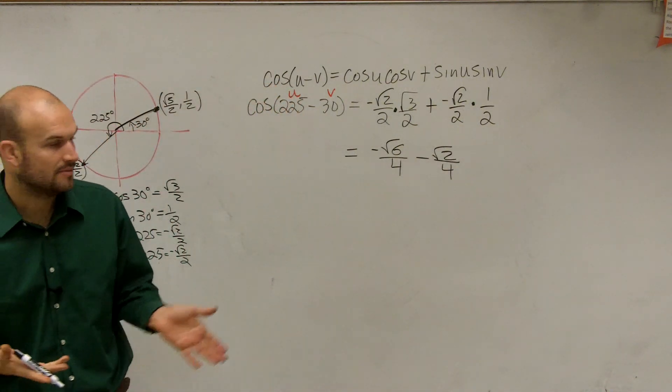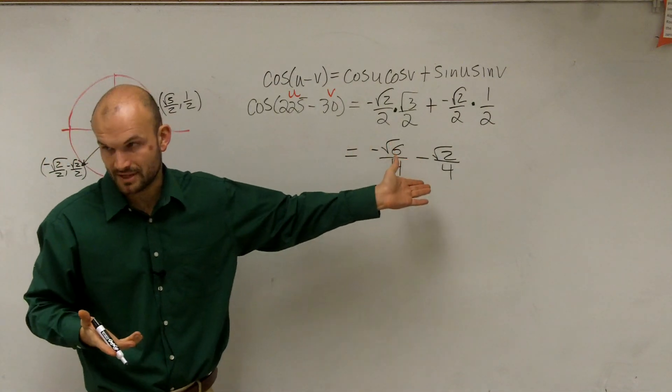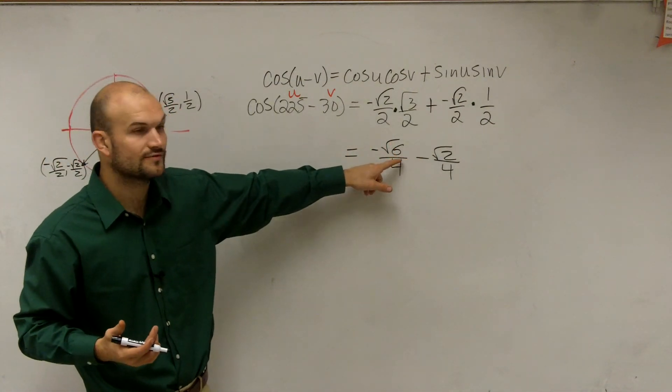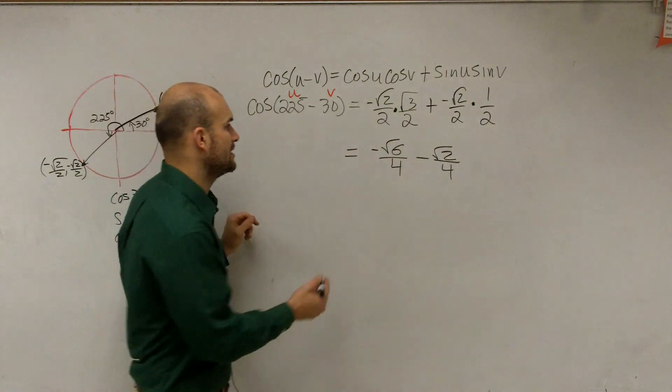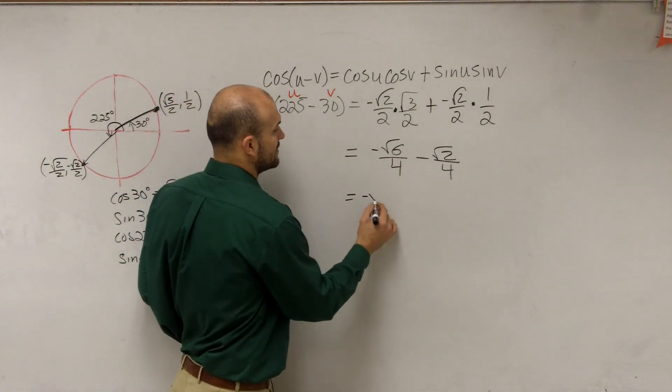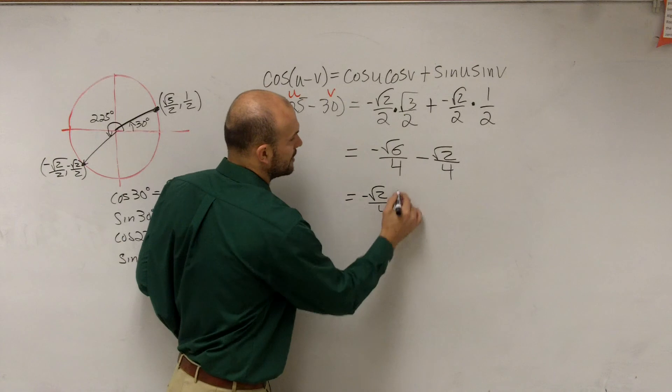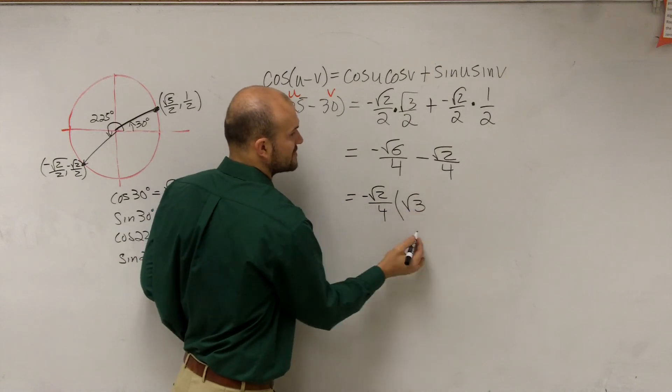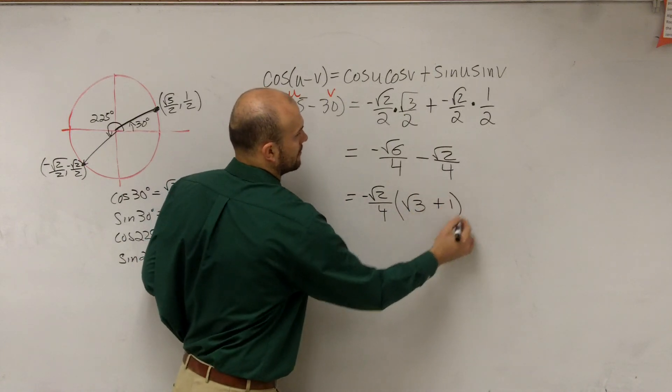Now to simplify the problem, we notice what these two have in common. And you can notice that they both, we can factor out a square root of 2 in the numerator, and a 4 in the denominator. And I'm going to factor out a negative square root of 2 over 4. That's going to leave me with a positive square root of 3 plus 1.